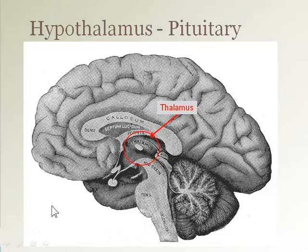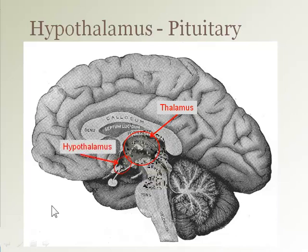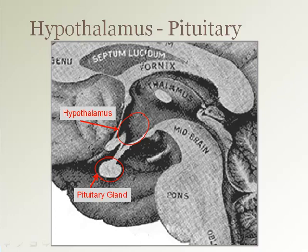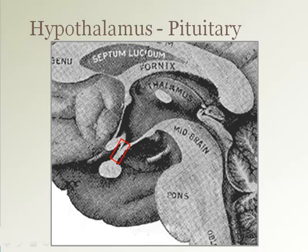Find the diencephalon on the diagram. It looks a bit like a duck head, with the eye representing the center of the thalamus and the hypothalamus as the beak portion. Looking more closely at the diagram, we can see the relationship between the hypothalamus and the pituitary gland. The connection between the hypothalamus and the pituitary gland is a stalk called the infundibulum.